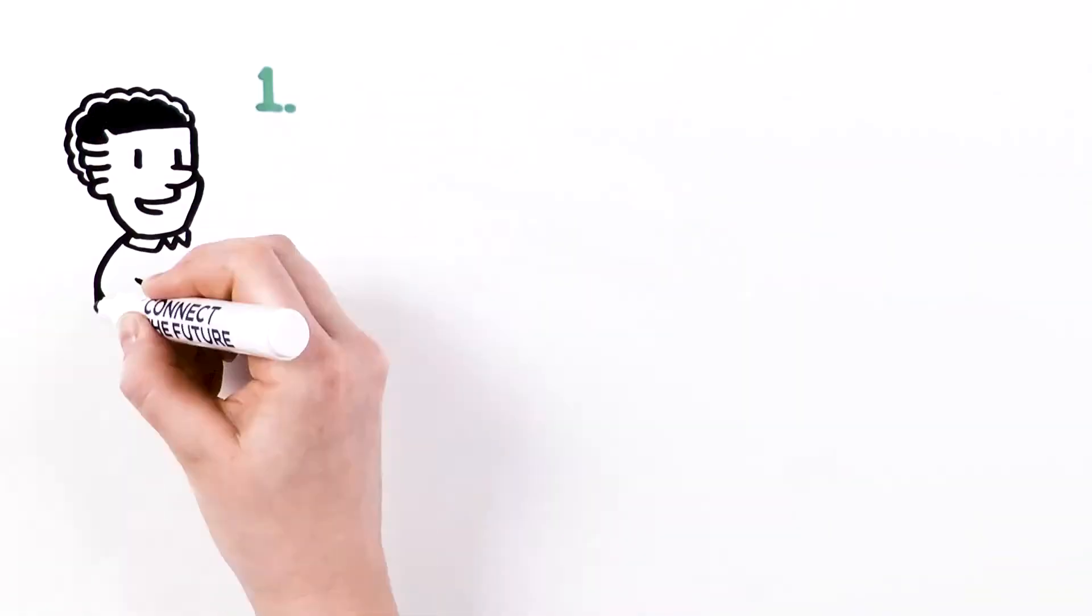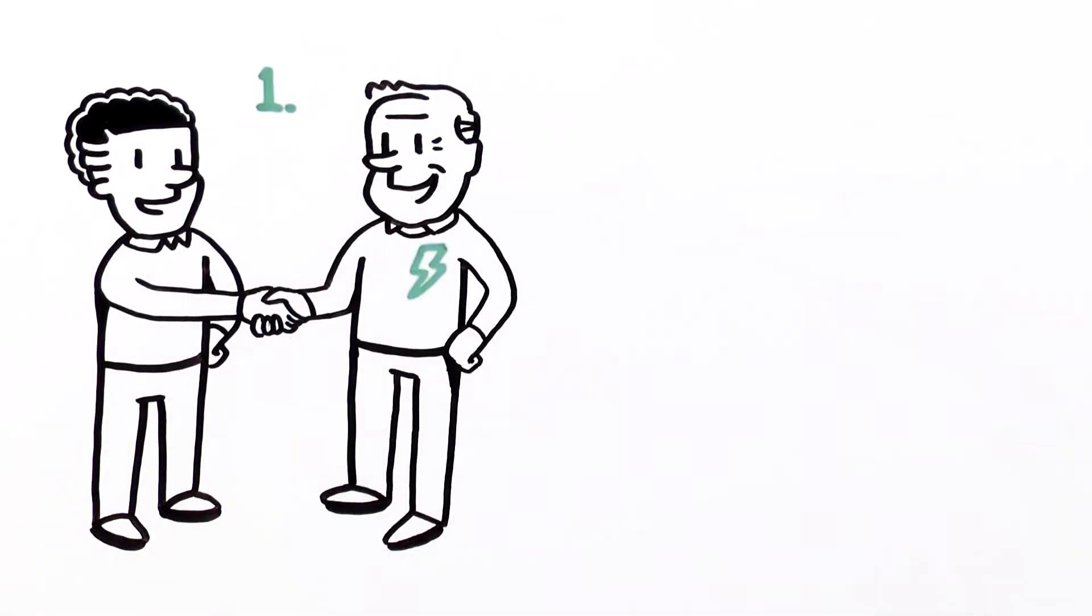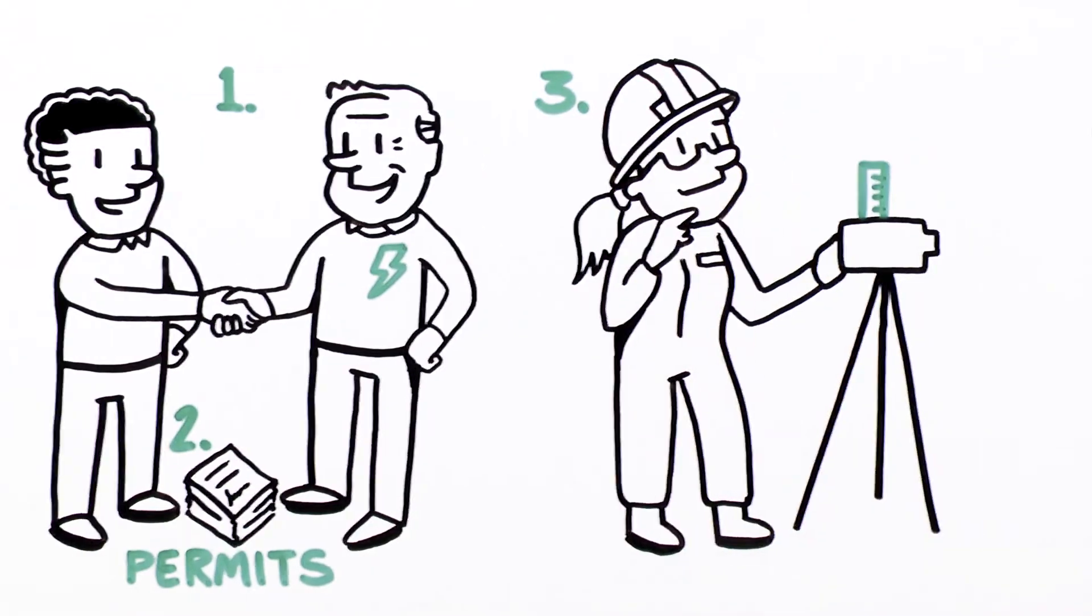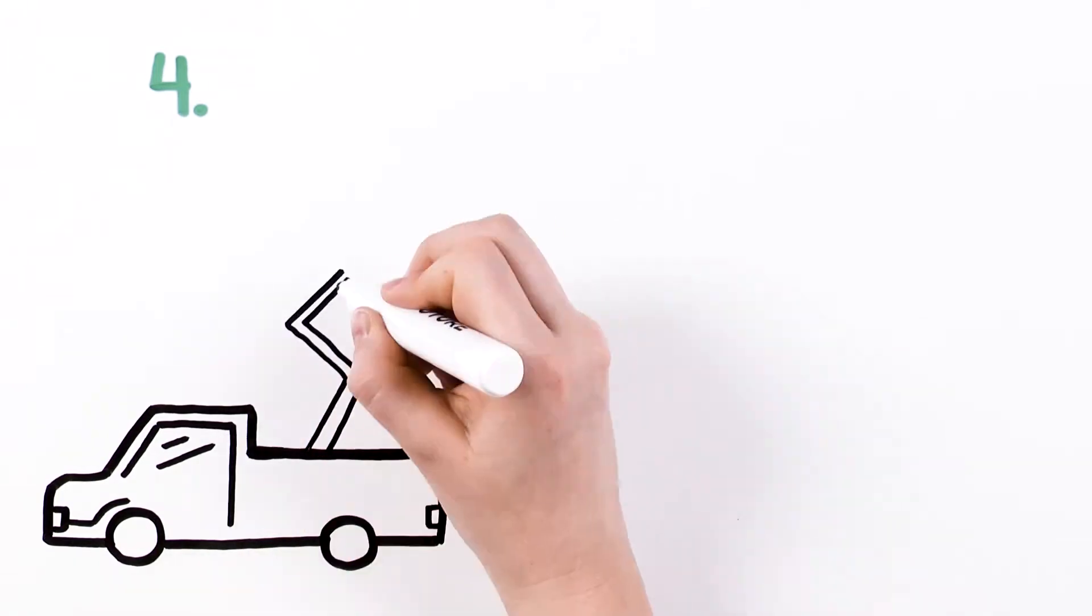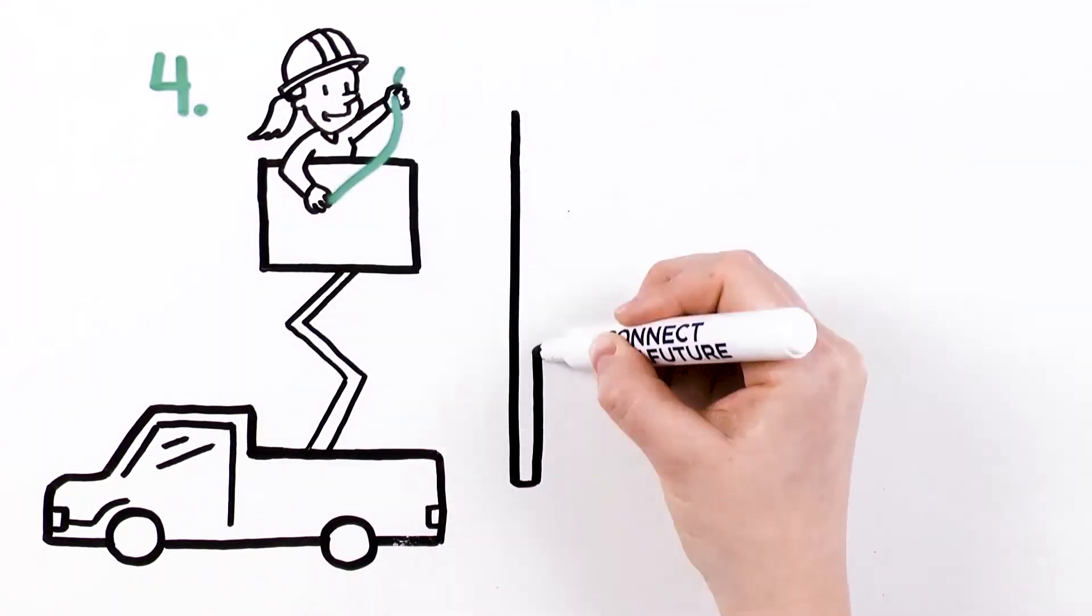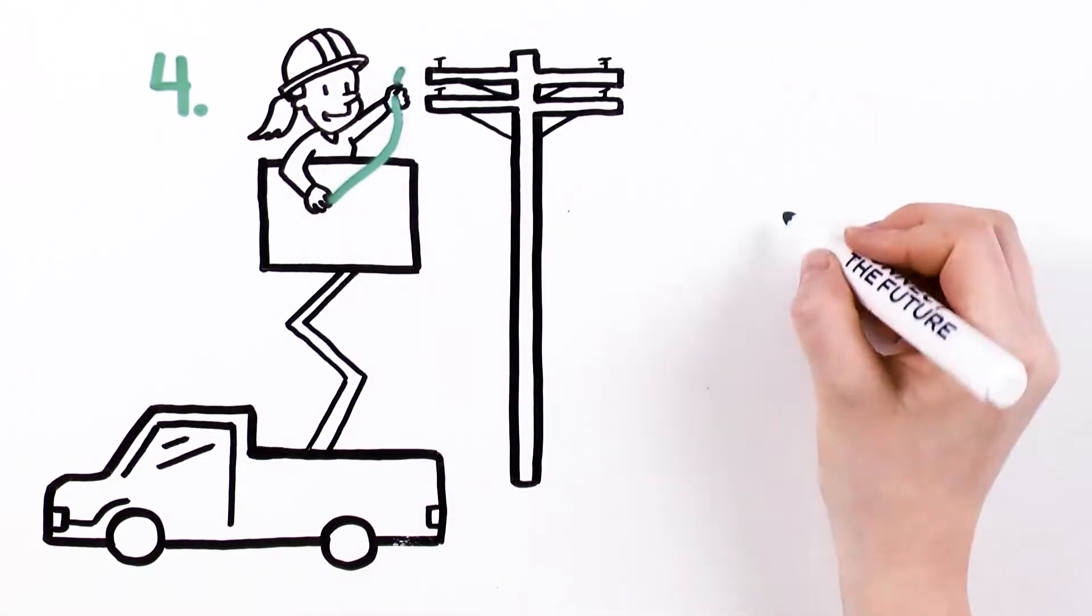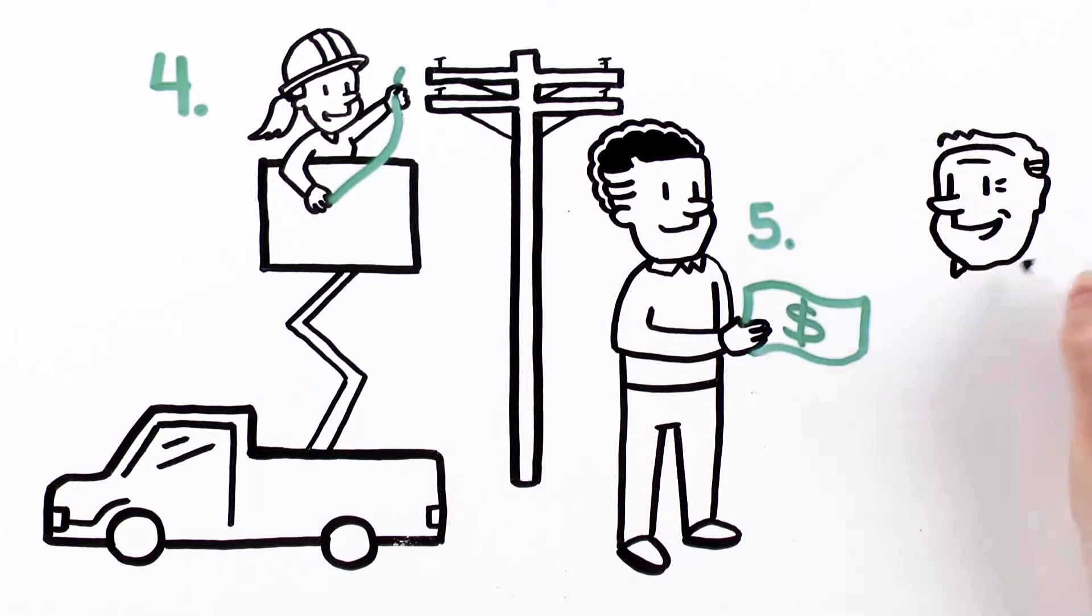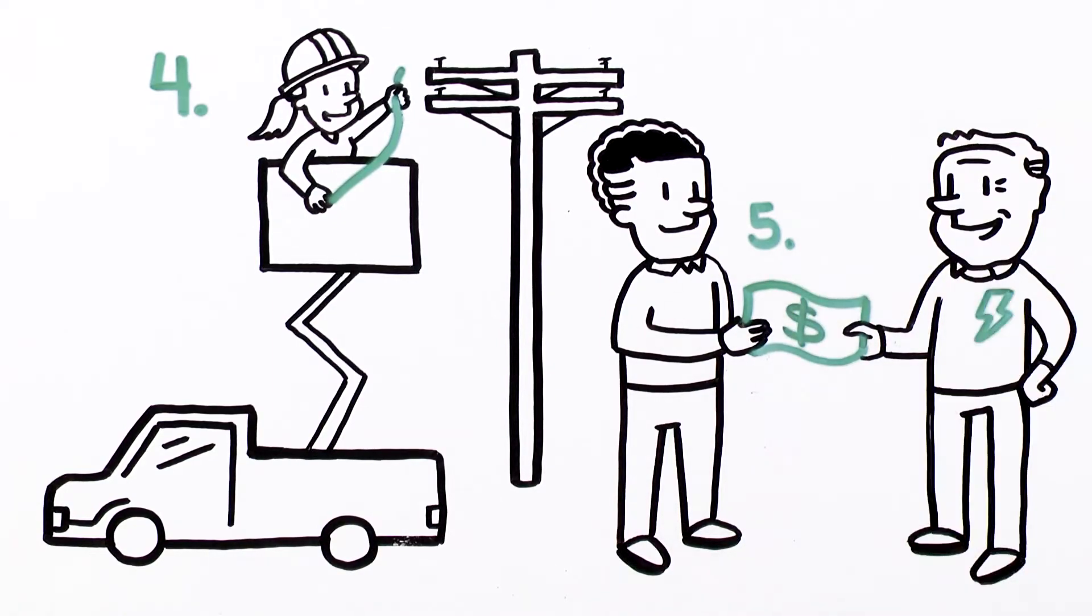That includes getting permission from the pole owner, getting permits, an engineering study, make-ready work—a term that includes all of the work done to make the pole ready for new attachments, like moving equipment or adding wires to secure it—and finally, paying ongoing rent to the pole owner to compensate them and cover the costs of maintenance and repairs.